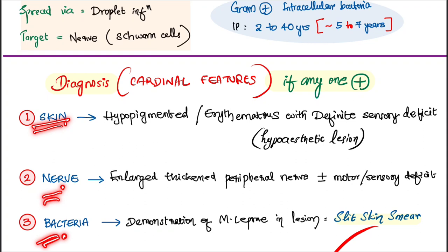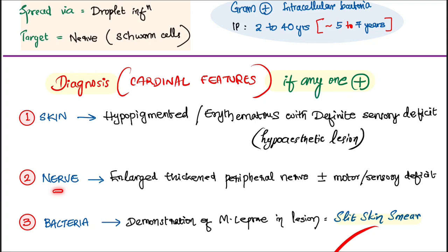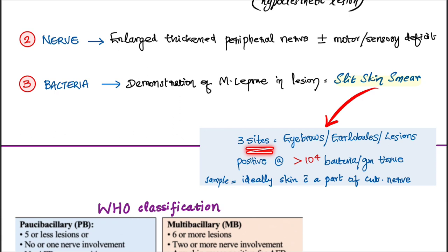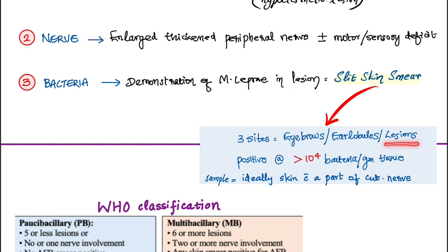Coming to the diagnosis, the diagnostic criteria has three points we have to remember: skin, nerve, and bacteria. If any one is positive, we can confirm the diagnosis as leprosy. First, the skin lesions — there should be hypopigmented erythematous lesions with a definite sensory deficit, that is the hypoesthetic lesion. Second, the nerve — there should be an enlarged thickened peripheral nerve with or without motor-sensory deficit. Third, bacteria — we have to demonstrate Mycobacterium leprae in the lesion via the slit skin smear. The three sites preferred are the eyebrows, the ear lobules, or the peripheral skin lesions.